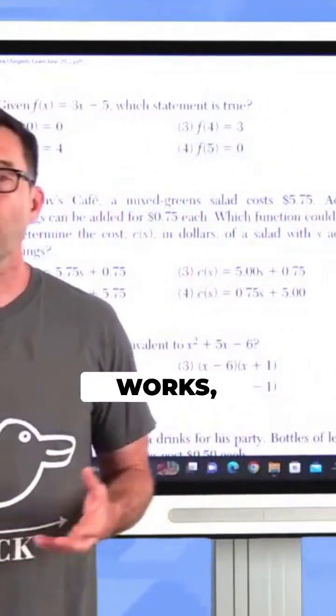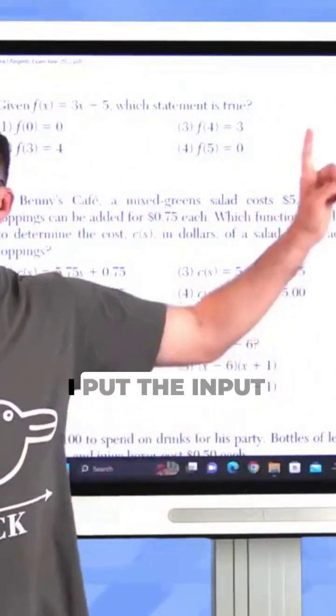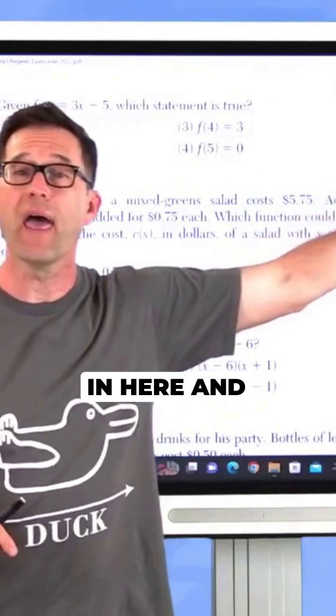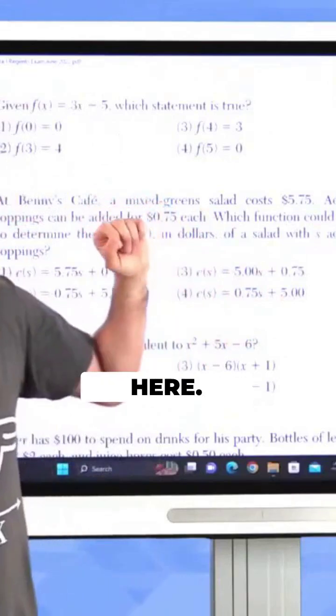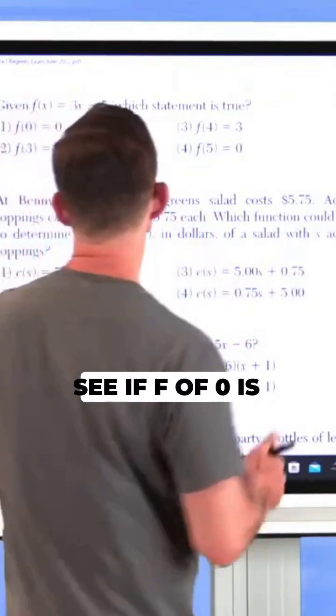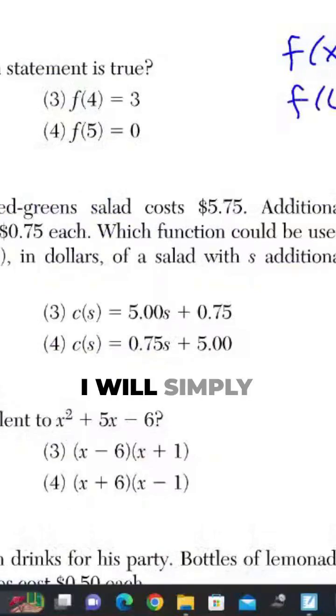Now remember how function notation works, right? Basically, I put the input in here and anywhere else there's an x or the input variable, I put it over here. So if I want to see if f of 0 is equal to 0, I will simply substitute 0 in for x.